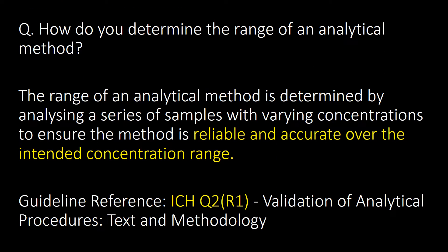This is a very frequently asked question. How do you determine the range of an analytical method? The range of an analytical method is determined by analyzing a series of samples with varying concentrations to ensure that the method is reliable and accurate over the intended concentration range. Guideline reference: ICH Q2.